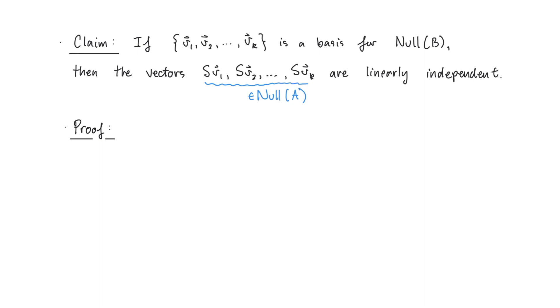Alright, now let's prove it. Consider a dependency relation among these vectors. That is, for some real numbers C1, C2, all the way up to Ck, we have that C1 times S times V1, plus C2 times S times V2, all the way up to Ck times S times Vk, is equal to 0.